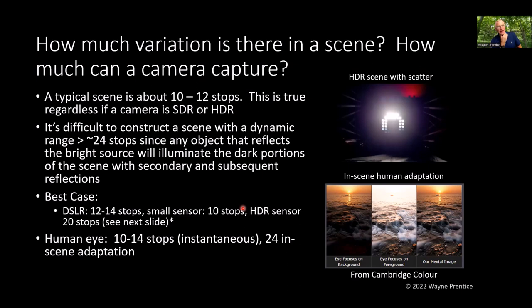How much does a camera actually capture? A typical scene is 10 to 12 stops — so you clearly don't need an HDR camera for everything. Finding a scene with 20 stops is really hard, because in the real world, if something is a million times brighter than the darkest part, it's very likely that bright thing will shed some photons onto the dark part, reducing the dynamic range. A DSLR has 12 to 14 stops; a small sensor like a cell phone or GoPro has about 10 stops; an HDR sensor has 20 stops. The human eye has about 10 to 14 stops instantaneous and 24 with adaptation.